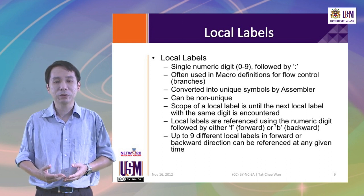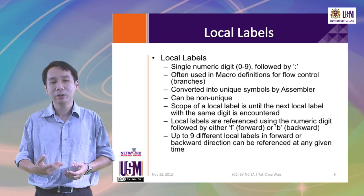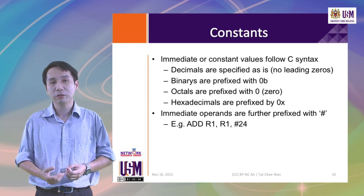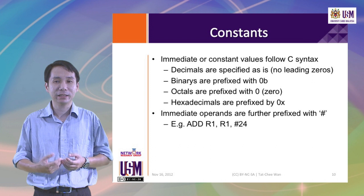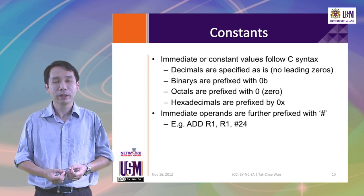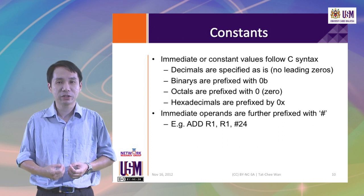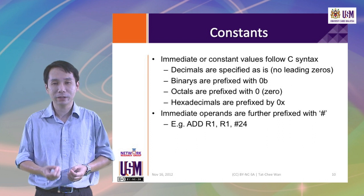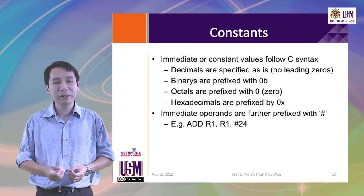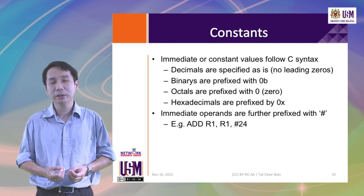Because we can use the digits 0 to 9, up to nine different local labels can be referenced in any single direction from our current location. Constants, or immediate values, will be defined following the C syntax. Decimals are specified as-is without any leading zeros. Binary values must be prefixed with 0B before the actual binary digits. Octal, or base 8 numbers, are prefixed with a zero — hence decimal values should not start with a zero digit. Hexadecimals are prefixed by 0x followed by the hexadecimal digits. When writing assembly language programs, immediate operands are further prefixed with a hash symbol, such as in: ADD R1, R1, #24.